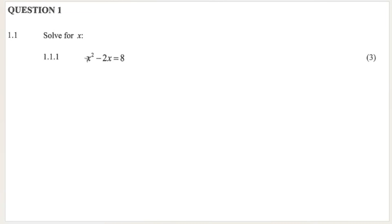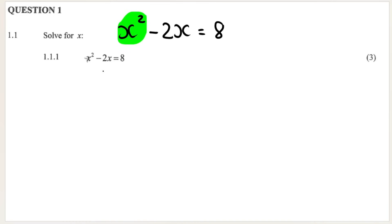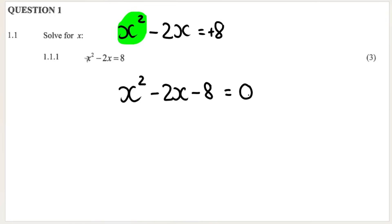Our first question: x squared minus 2x equals 8. As soon as you see the x squared, you know it is a quadratic equation. You need to remember the first step, which is to get it into standard form — make it equal to zero. So the inverse of plus 8 is minus 8. Make it equal to zero.